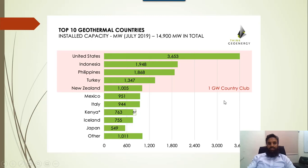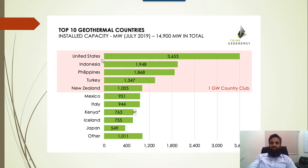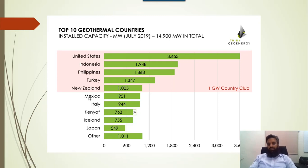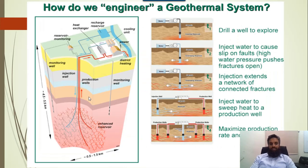Looking at the statistics, the major chunk of geothermal energy is used by the United States, which is approximately equal to 3653 MW. Then Indonesia, Philippines, Turkey, New Zealand, Mexico, Italy, Kenya, Iceland, Japan and others account for approximately 1011 MW. These are the key statistics of geothermal energy usage worldwide.